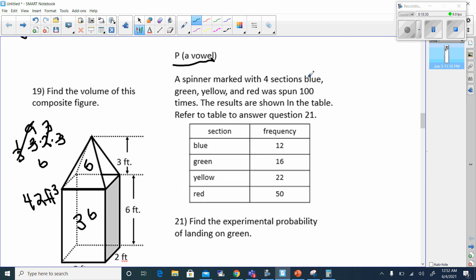The spinner marked with four sections, blue, green, yellow, and red, was spun 100 times. These are the results. Find the experimental probability of landing on green. Green was 16, that's 16 out of 100 spins. Remember, experimental probability is what did happen. We can divide both of these by 4. 16 divided by 4 is 4, and 100 divided by 4 is 25. So 4 over 25 would be my answer.